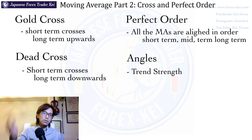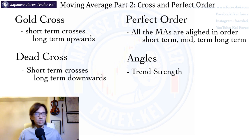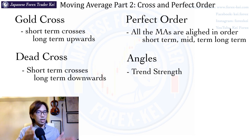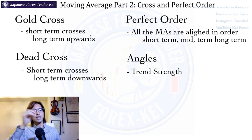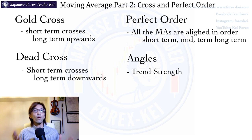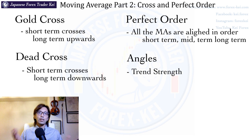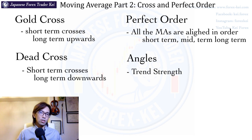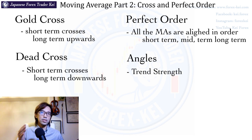In contrast, a dead cross happens when the short term crosses the long term downwards. And perfect order is when all 3 moving averages — short term, mid term, and long term — point towards the same direction.